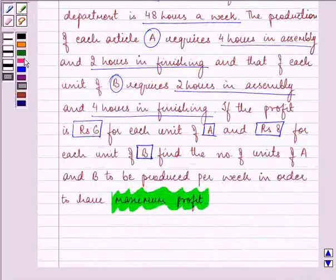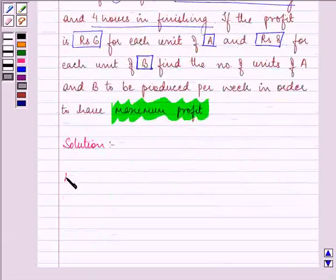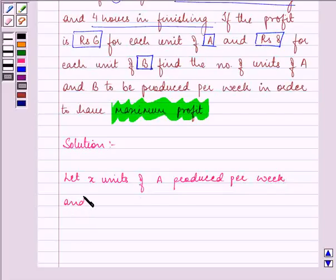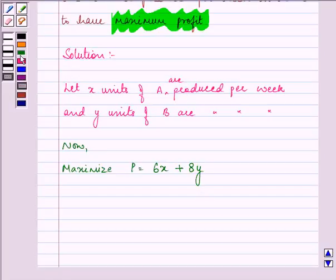Now let's proceed with the solution. Let x units of A are produced per week and y units of B are produced per week. We need to maximize our profit function, that is P equals 6x plus 8y, subject to constraints.